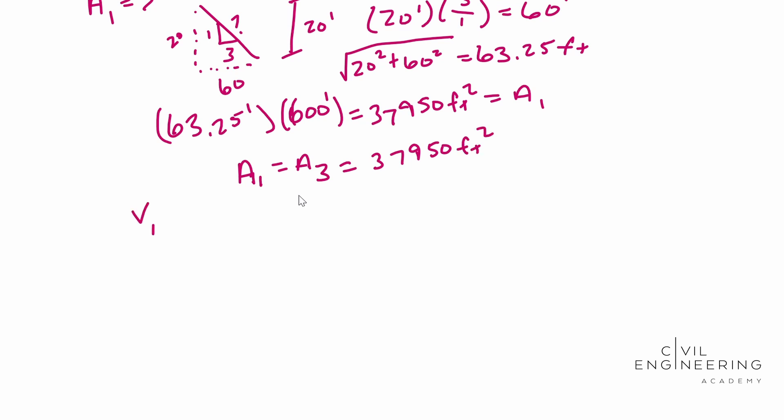So now we need to find the volume. Volume of one is equal to the volume of three because remember they're identical. You're going to do 37,950 square feet and we're going to multiply that by our thickness, which if you remember from the problem is a half a foot, six inches is half a foot and we need it in feet so that way our units jive. So whenever you do that, you end up with 18,975 and that's going to be cubic feet for each, for V1 and V3.